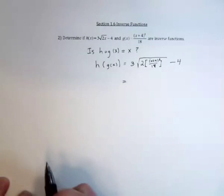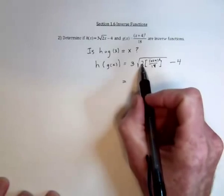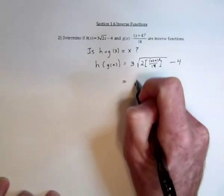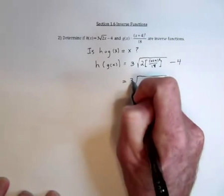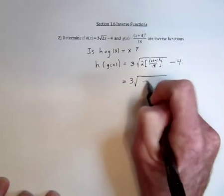And now we need to see if these operations cancel each other out. First of all, a 2 and an 18, that can be simplified to be just a denominator of 9.